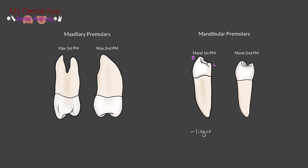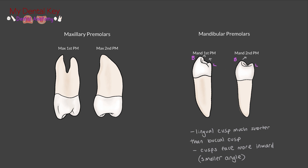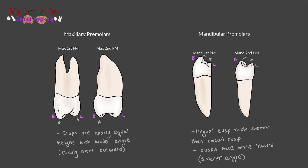From this view, you can see how the lingual cusp is significantly shorter than the buccal cusp. The two cusp tips are also facing more towards each other than outwards. This will differentiate the mandibular premolars from the maxillary premolars, which have nearly equal buccal and lingual cusp heights, with their two cusps facing more away from each other.